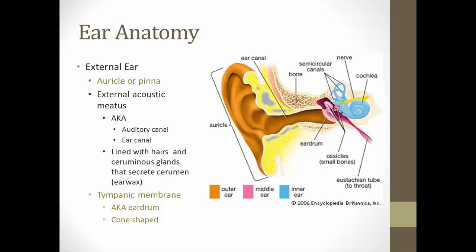The ear canal is lined with hairs and ceruminous glands that secrete cerumen, which is basically earwax. That's a protective substance so that any debris — or even insects, God forbid — gets caught up in the earwax, and then the earwax dries up and falls out of the ear. The last portion of the external ear is called the tympanic membrane, or eardrum, which is cone-shaped and picks up vibrations from sound waves.